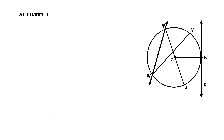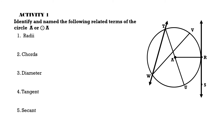Now we have Activity One. The instruction is to identify and name the following related terms of circle A: number one, radii; number two, chord; number three, diameter; number four, tangent; and number five, secant. Let's begin with number one, radii — the plural of radius. The radii of circle A are line segment AR, line segment TA, and line segment UA.